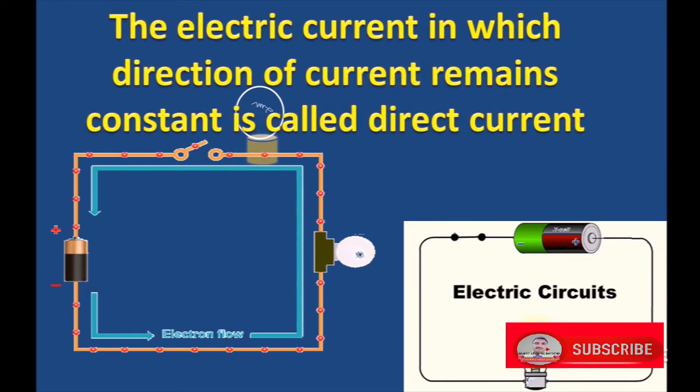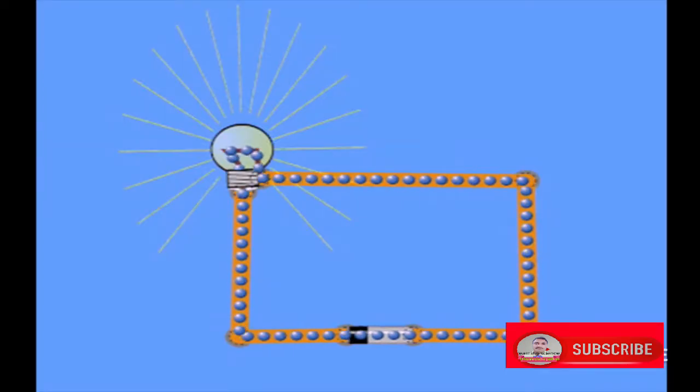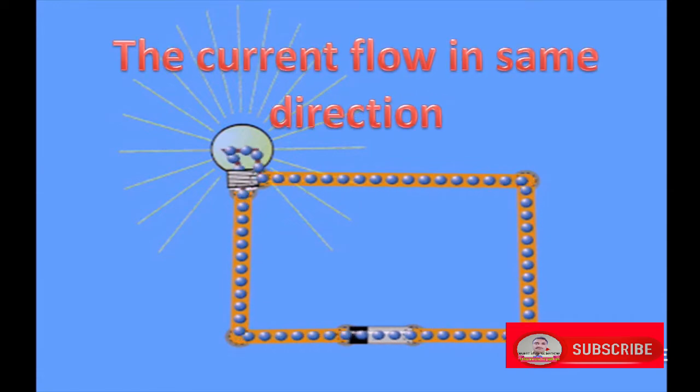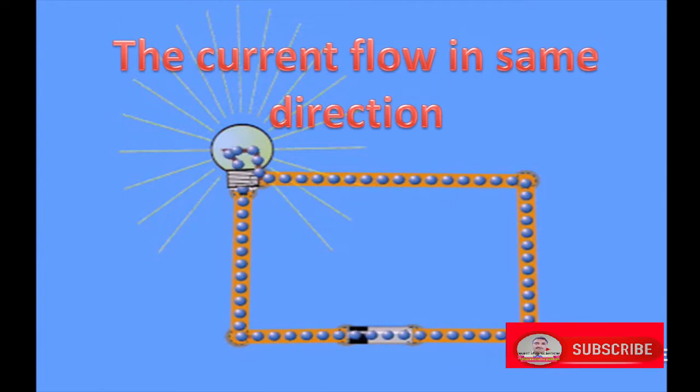The electric current in which direction of current remains constant is called direct current. The current flows in the same direction. Here motion of current is in a fixed direction, hence it is known as direct current.